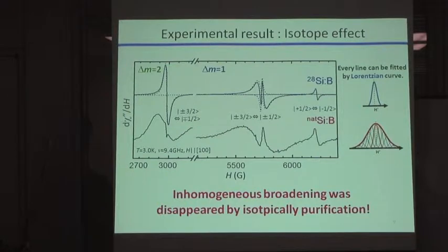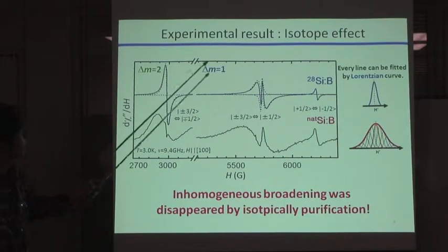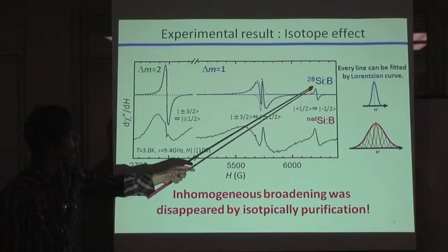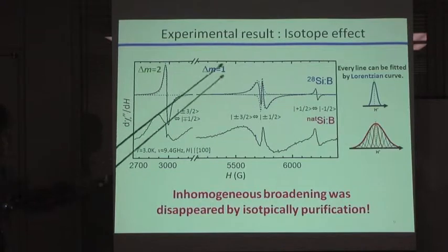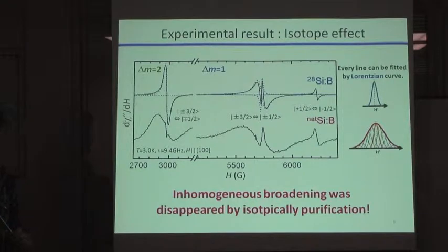And in addition, by isotopically purification, all spectrum can be fitted by a complete Lorentzian curve, like this. So, from this result, we concluded that the source of Gaussian broadening was the isotopes.